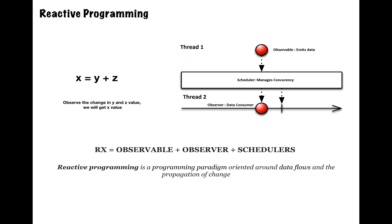What is reactive programming? In a nutshell, reactive programming is a programming paradigm oriented around data flows and the propagation of change. We are observing a particular data set or data stream, and as soon as there is a change, we get the current values. That is how reactive programming works.